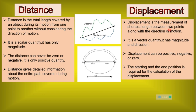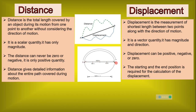Displacement is the measurement of the shortest distance between two points along with the direction of motion. You have to consider the shortest distance between two points in the direction the motion is happening. It is a vector quantity — it has both magnitude and direction. Displacement can be positive, negative, or zero. The starting and end points are required for the calculation of displacement. On a circular track, when the object moves from A to B, the displacement will be the shortest distance between A and B — it is the diameter of the circular track.